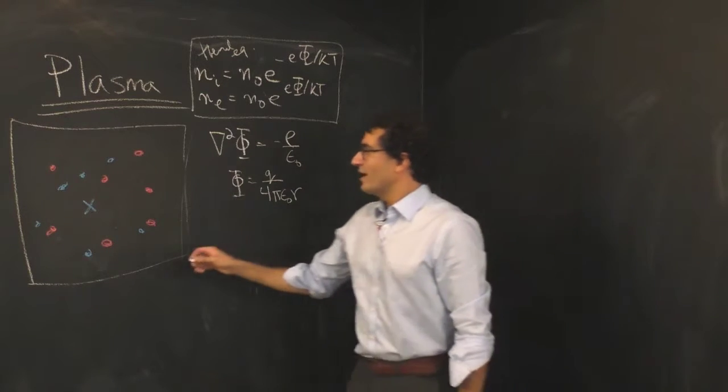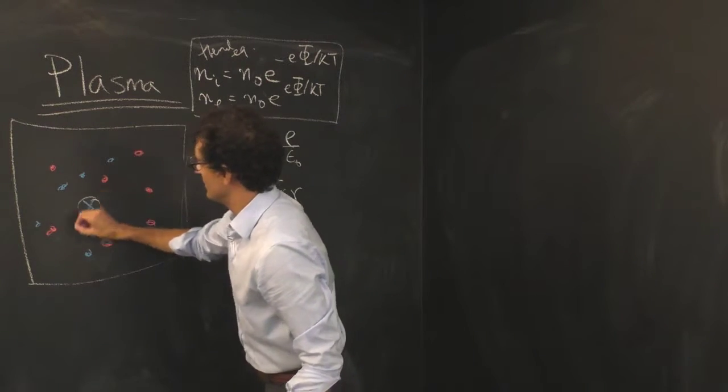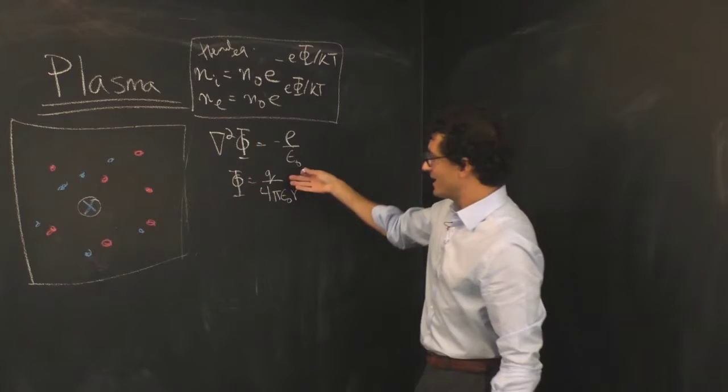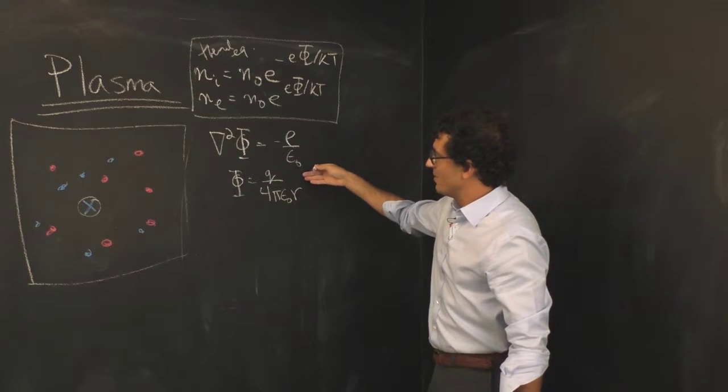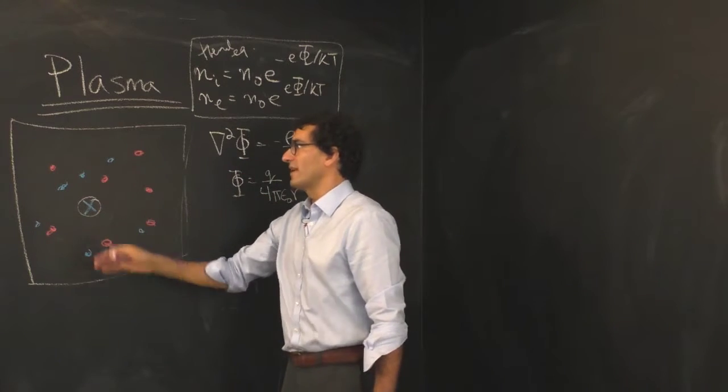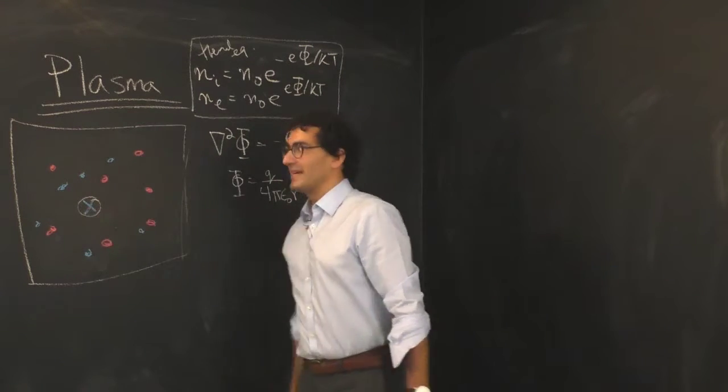So what happens when we introduce a test charge not into vacuum - in that case it would simply produce the one over R potential - but what happens if we introduce that electron in the middle of this thermal plasma?